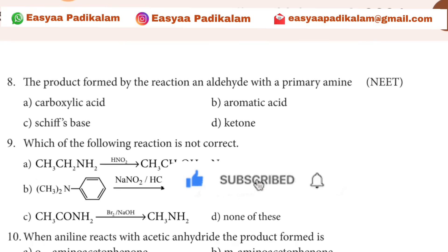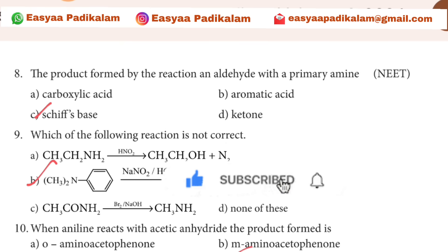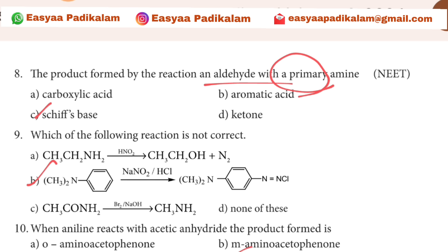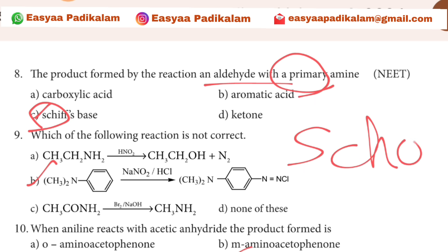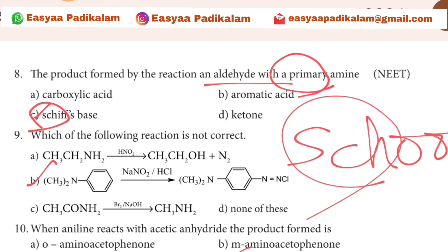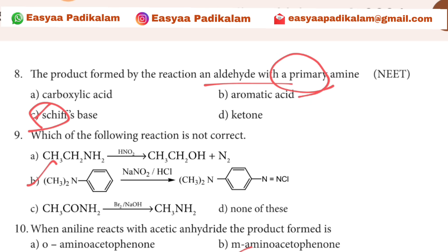Question 8: The product formed with the reaction of aniline with a primary amine. Primary means the product is formed from primary amines.